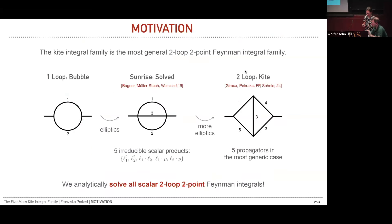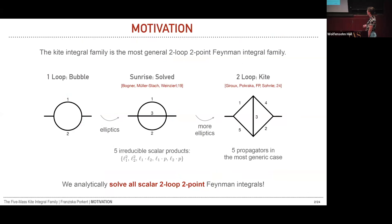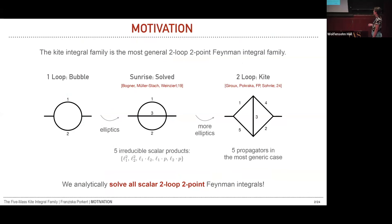To motivate this, let's first consider self-energy or two-point diagrams in scalar QFT. At one loop, computing the most generic of these is simple — it's just a one mass bubble or a two mass bubble that you even encounter in your first QFT class. At two loops, things get more complicated. For example, in the electron self-energy, the massive elliptic sunrise integral appears, and this was only solved in 2019 for the unequal mass case.